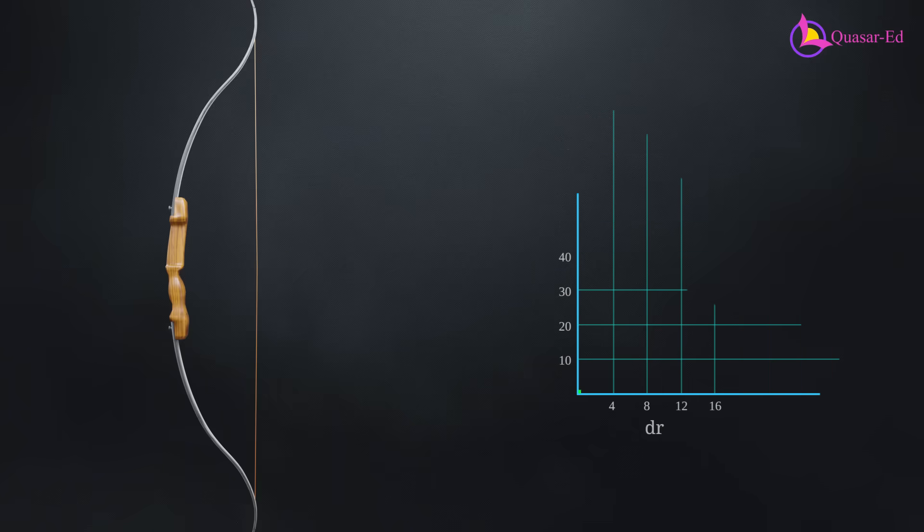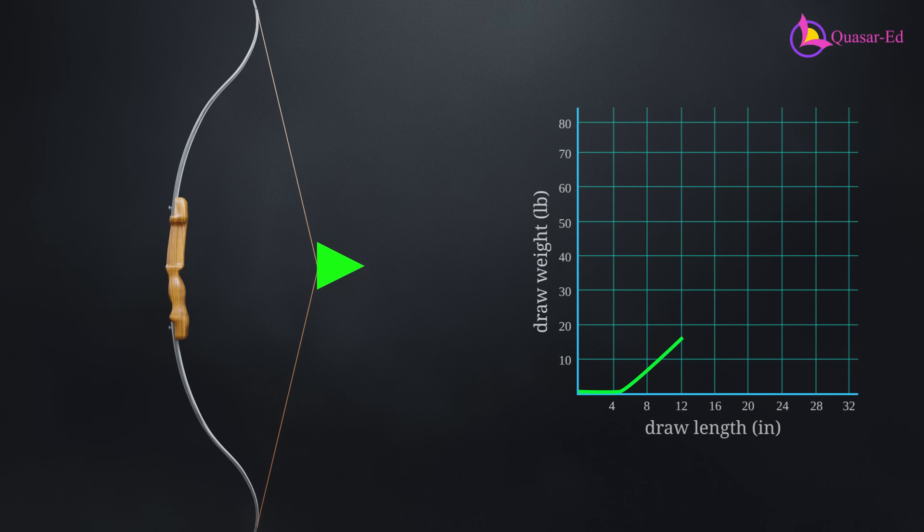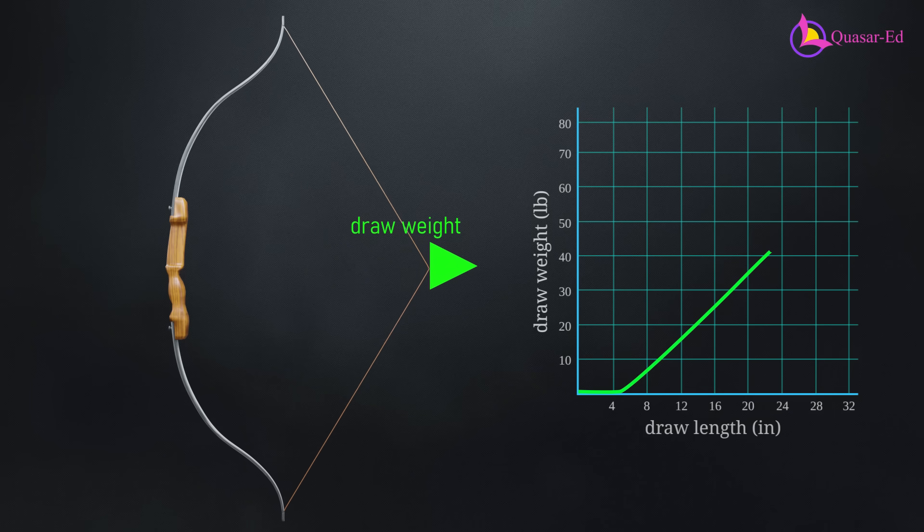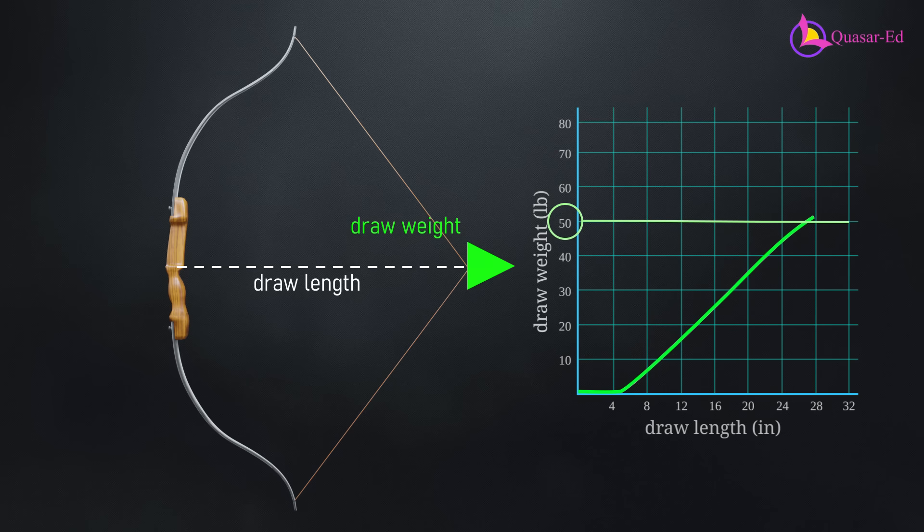In a recurve bow, drawing the string requires gradually increasing force, almost in a linear fashion. This force is called draw weight, and the distance you pull the string back is the draw length. When fully drawn, the bow reaches its maximum draw weight, measured in pounds.